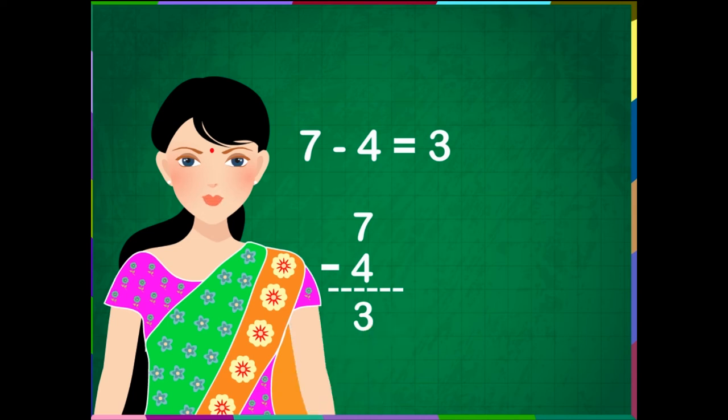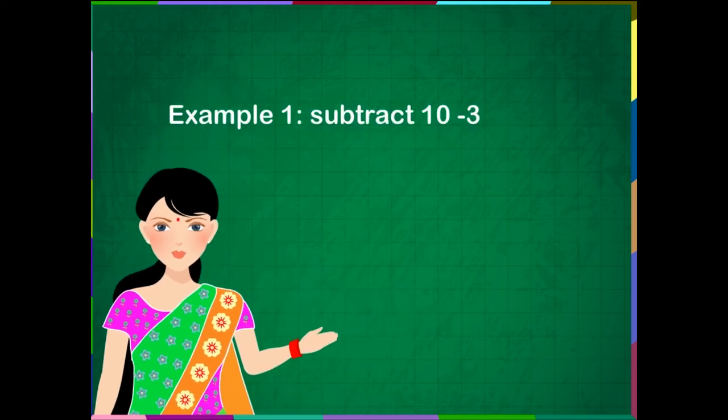We will use small lines in the side of the numbers and cross the lines as we did before to get the difference. Example 1.